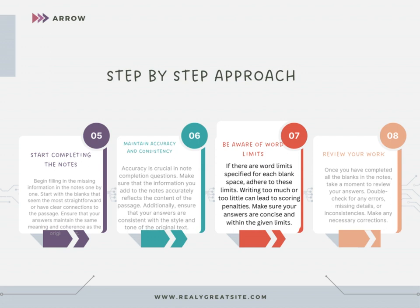Maintain accuracy and consistency — make sure that the information you add accurately reflects the contents of the passage and is consistent with the style and tone of the original text. Also observe word limits — if there are word limits specified for each blank space, adhere to these limits, as writing too much or too little can lead to scoring penalties. Lastly, review your work — once you have completed all the blanks, take a moment to double-check for any errors, missing details, or inconsistencies, and make any necessary corrections.